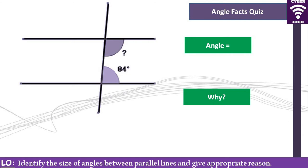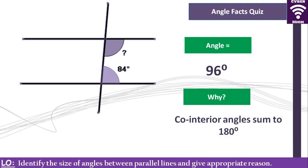What is the size of the angle marked? From our previous questions you should be able to tell. It is 96 degrees. Why is it 96 degrees? Because it is a co-interior angle. Co-interior angles add up to 180.